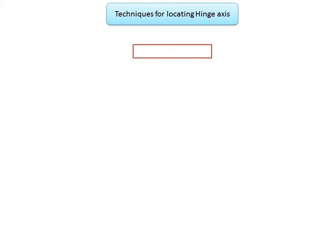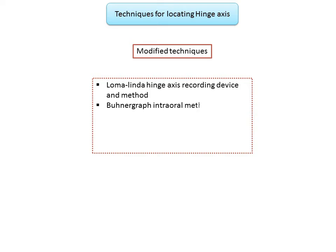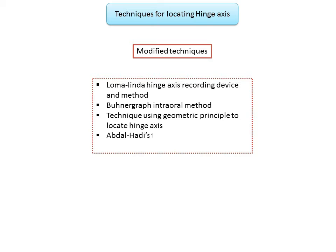There are also other modified techniques used to locate the arbitrary kinematic hinge axis by modifying conventional methods. Worth mentioning are: the Loma Linda hinge axis recording device and method, the Bern graph internal method, a technique using geometric principles to locate the hinge axis, and Abdul Hadi's technique of locating the arbitrary hinge axis.